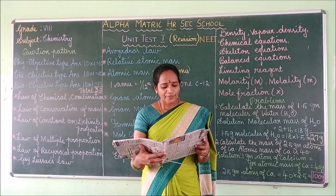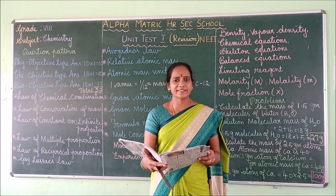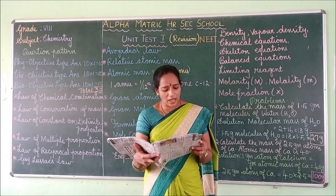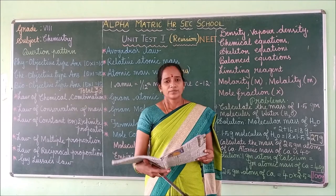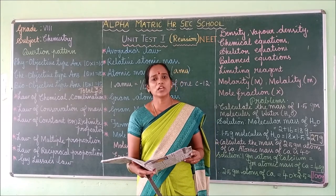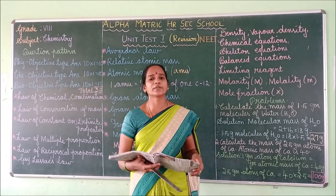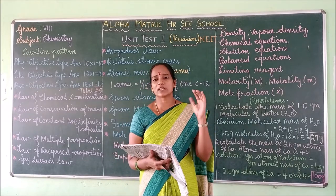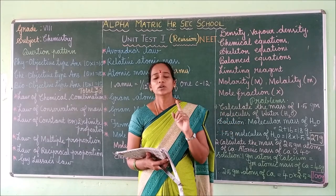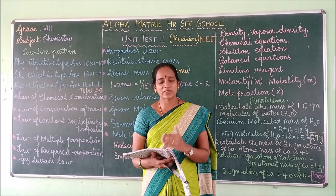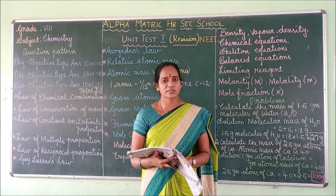Turn to page number four. In page number four, the law of constant or definite proportion is given. Who proposed this law? This law is given by Proust. Underline the word Proust. Proust proposed the law of constant proportion, also called definite proportion — both names you have to know. Sometimes you will be asked who proposed the law of definite proportion only, so you should not get confused. Both names refer to the same law, given by Proust.